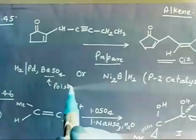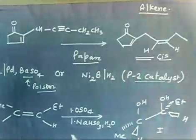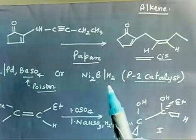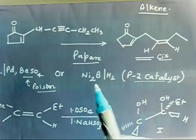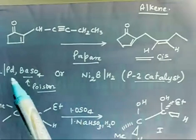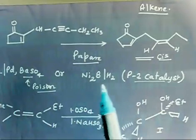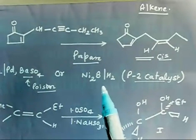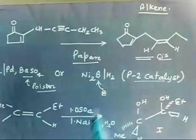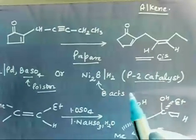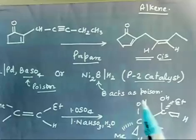Similarly, there is another catalyst called P2 catalyst. I can also use P2 catalyst — this is nickel boride, nickel with boron and hydrogen. In this case boron is poisoning the nickel, just as BaSO4 is poisoning the platinum. This is again a cis addition only, and it will be milder so it will only reduce alkyne to alkene. Boron acts as the poisoning agent here.